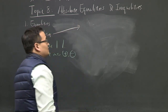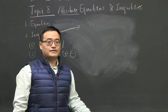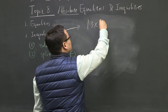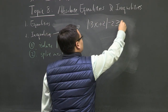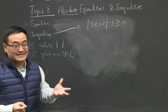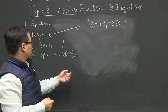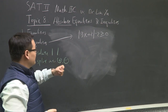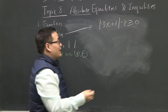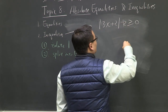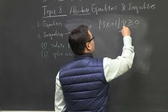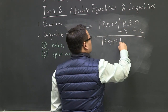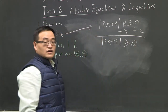Let's move on to absolute inequalities. Let's take an example: the absolute value of 3x plus 2 minus 12 is greater than or equal to 0. Do the same rules apply? They absolutely do. The first thing we have to do is isolate the absolute value. Add 12 to both sides, and we get the absolute value of 3x plus 2 is greater than or equal to 12. First step done.